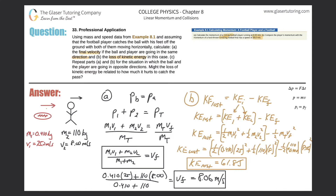Part C says: repeat parts A and B for the situation where the ball and player are going in opposite directions. The question also asks whether the loss of kinetic energy might relate to how much it hurts to catch the pass. The equations are the same — the only difference is the sign of one velocity. Let's say the football player is now moving to the left, so that velocity becomes negative.